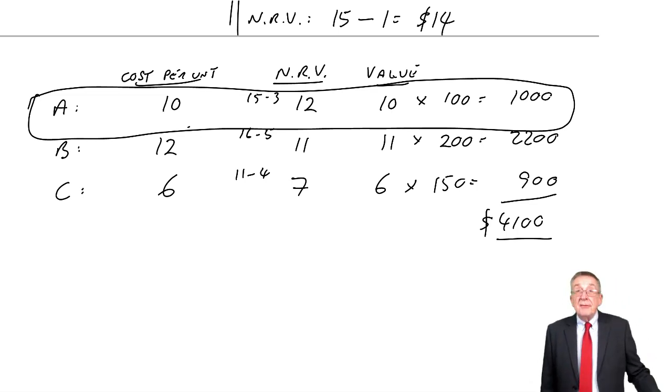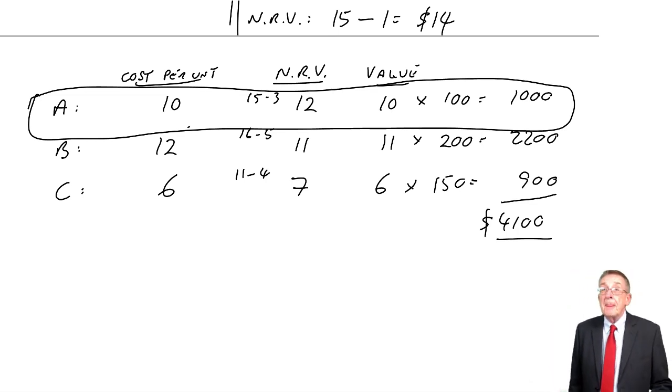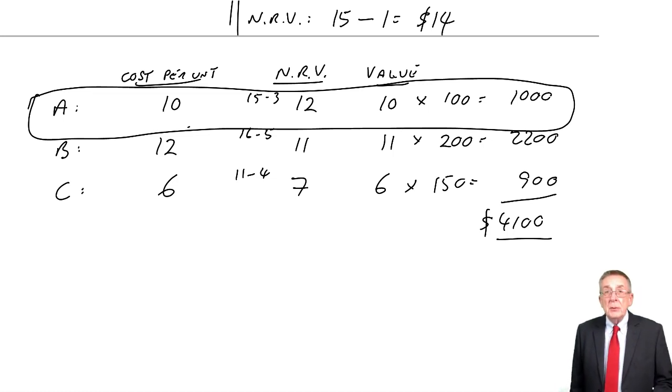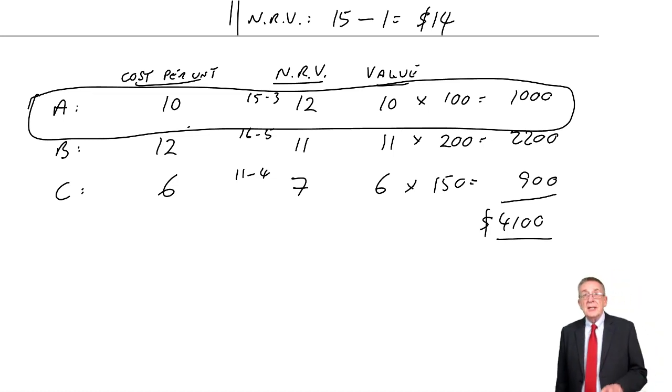Alright, so that's the first rule in the accounting standard, always value at the lower of cost and net realizable value. The second rule, though, takes a little bit more work, is how we decide what the cost actually is. Now if you're wondering why that's a problem, well, I'll explain why in the next lecture and how we deal with it.